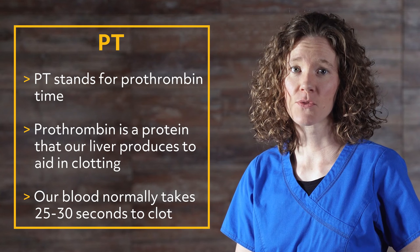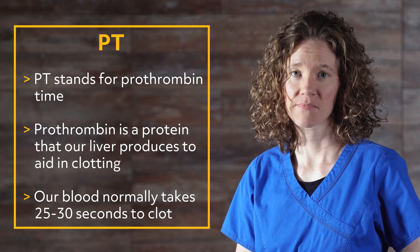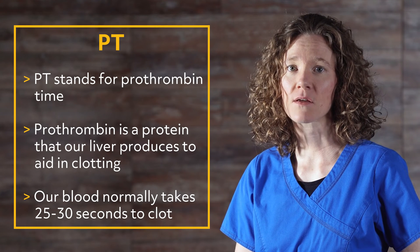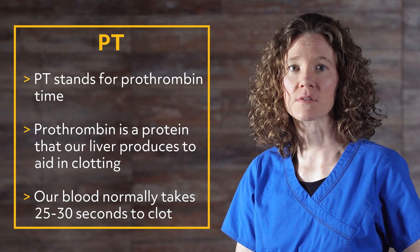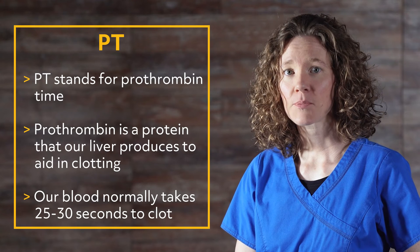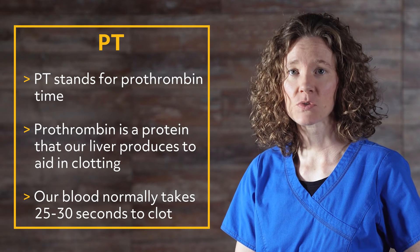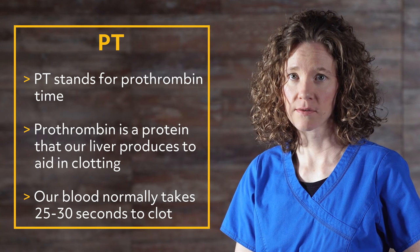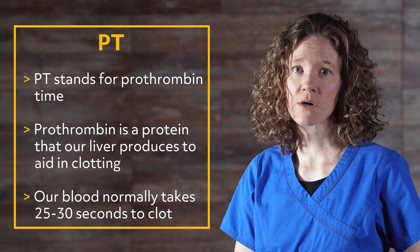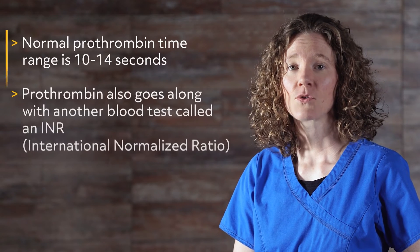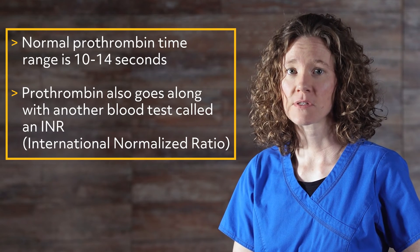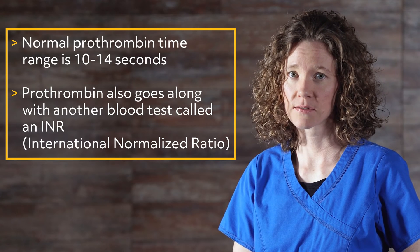PT stands for prothrombin time. Prothrombin is a protein that our liver produces to aid in clotting. Our blood normally takes 25 to 30 seconds to clot, unless we are on blood thinners. If prothrombin time is too short or too long, clotting is out of balance. Normal prothrombin time range is 10 to 14 seconds.